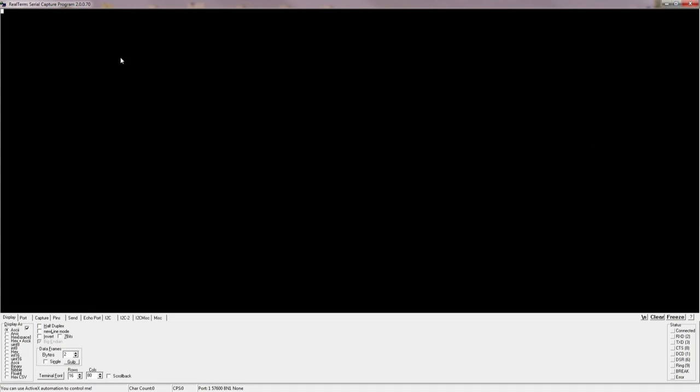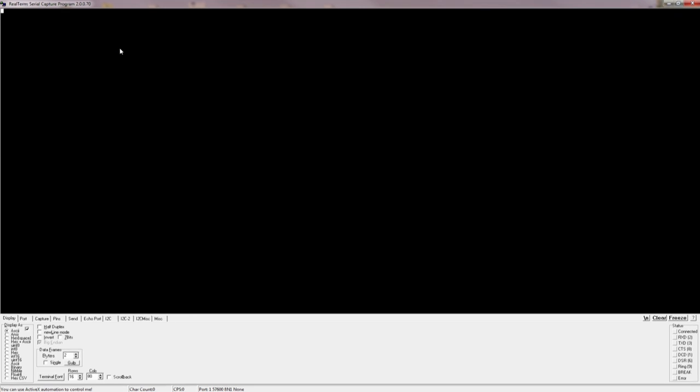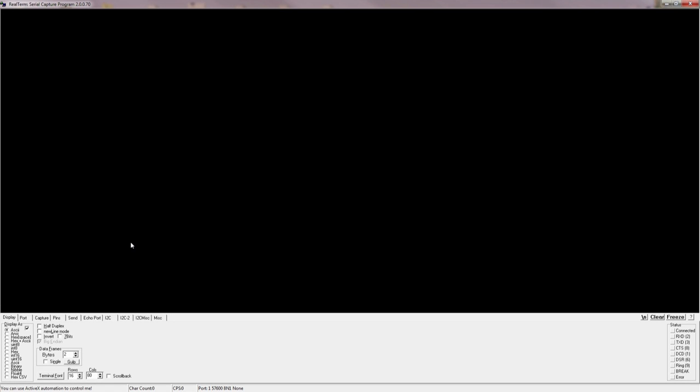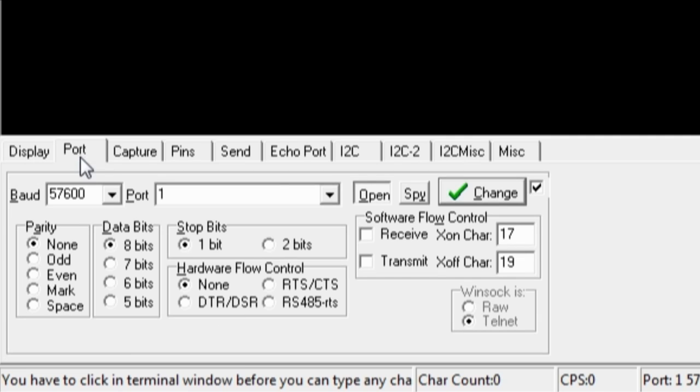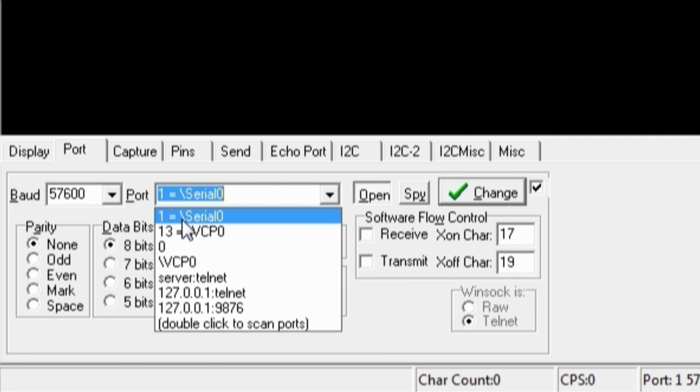To connect with the HM-10 you will need a serial terminal program. RealTerm is a quite nice one which is open source and you can download it from the internet. We have to set up the port first, this means this number, it means which COM port it is.